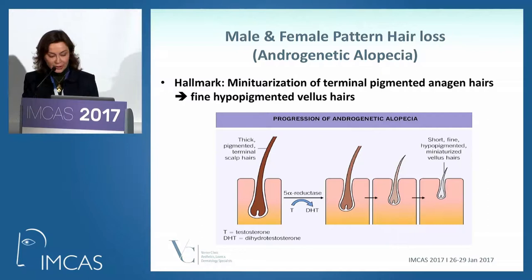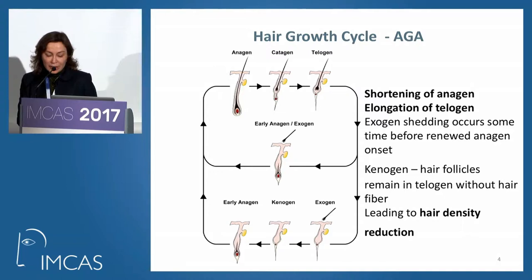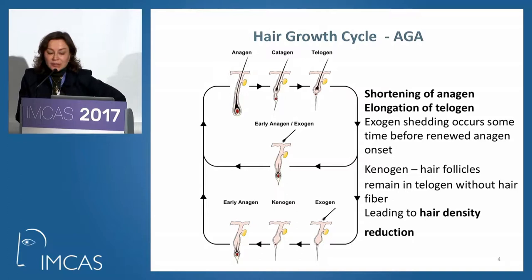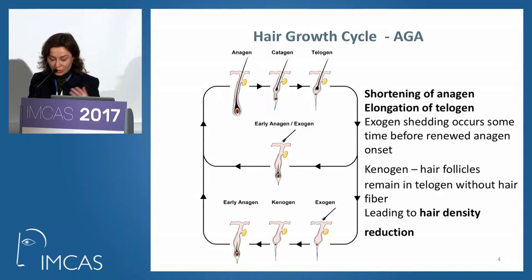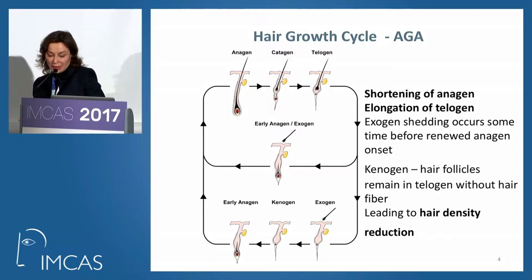Terminal hairs become fine hypopigmented vellus hairs, as you can see here. There are two processes involved: shortening of the anagen phase and elongation of the telogen. There is also some exogen shedding that occurs before renewal of the anagen onset, and with aging we also see kenogen — hair follicles that remain in telogen without hair fibers, so these are empty hair follicles.